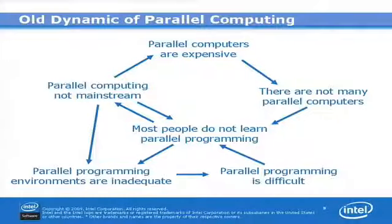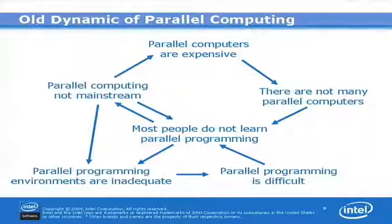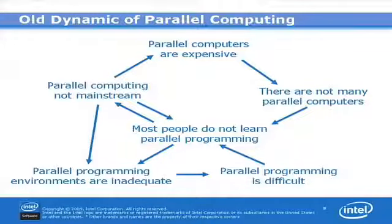This slide illustrates some of the old thinking about parallel computing. Parallel computers were expensive, so only a few companies and national labs could buy them. That led to there not being many parallel computers. Because they were so expensive, most people did not learn parallel programming. With so few users, parallel computing was not in the mainstream. Parallel programming environments were inadequate because not enough people were demanding better tools. And this, of course, led to parallel programming being difficult — which is what we're trying to fix.